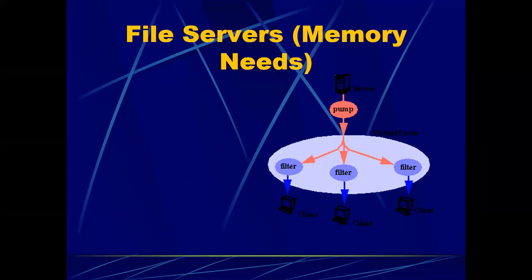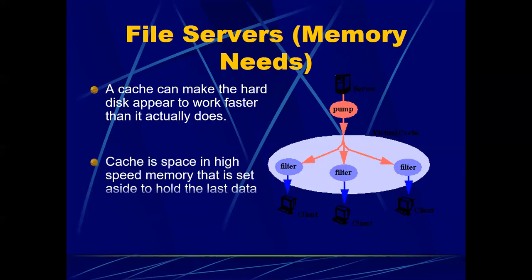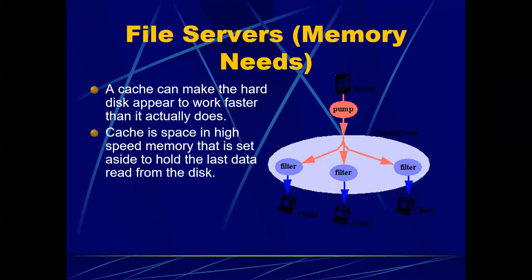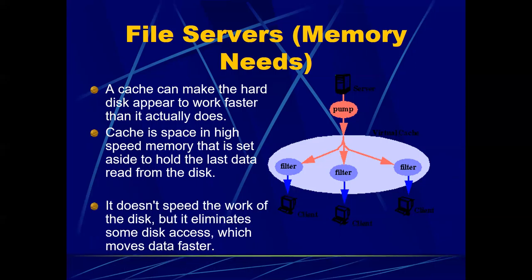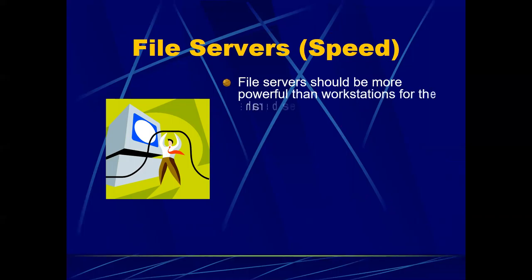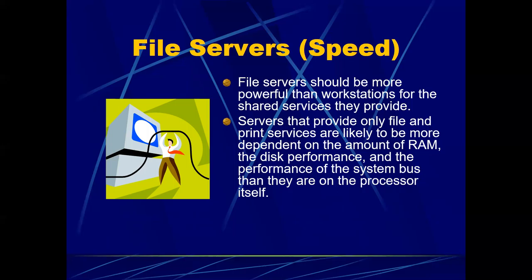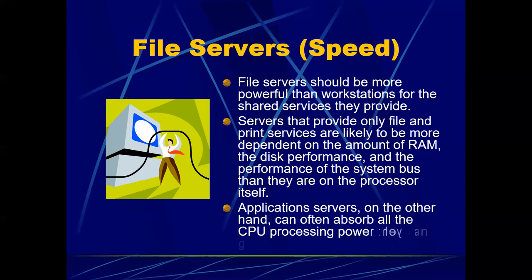Another topic is memory needs. A cache can make a hard disk appear to work faster than it actually does. A cache is space in high-speed memory set aside to hold the last data read from the disk; it eliminates some disk access. File servers that provide only file and print services are more dependent on RAM, disk performance, and the system bus than on the processor itself. Application servers, on the other hand, can often absorb all the CPU processing power they can get.